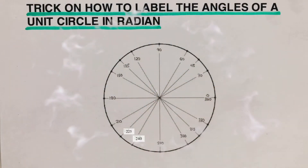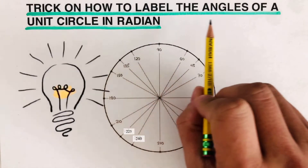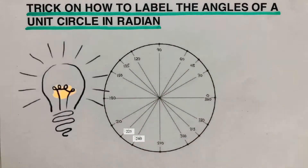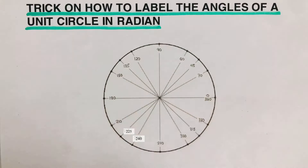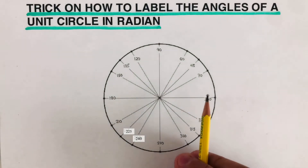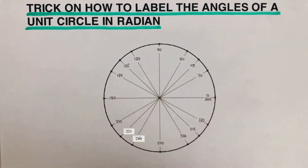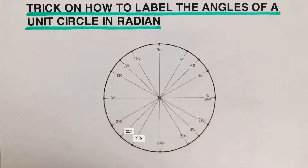Hello everyone! In this video, we're gonna focus on the trick on how to label the angles of a unit circle in radian. As you can see on this unit circle that we have here, I already have labeled the angles in degree. Now we're going to label the angles here in terms of radian. So I'll give you the trick on how to do that.